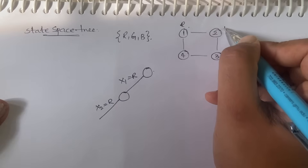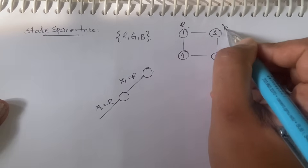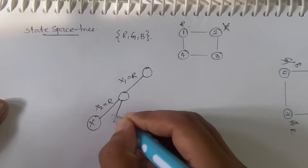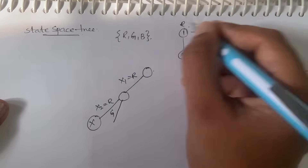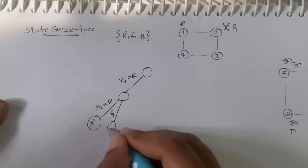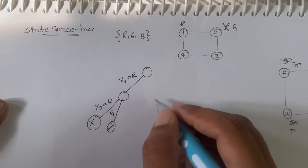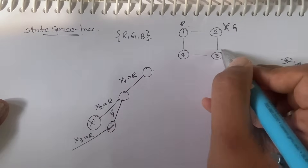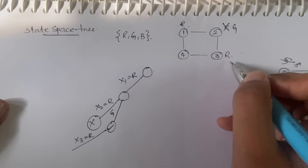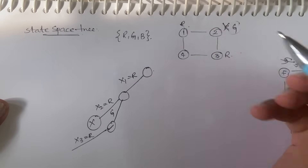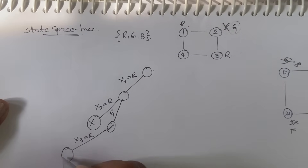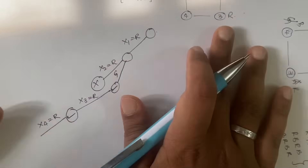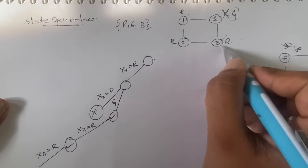If you give red to x2, they will have the same color, so you cannot — this becomes a dead-end node. Can you give green to x2? Yes, the adjacent colors are not the same, so x2 = green is accepted. Moving further, can you give red to x3? Yes, it is accepted because the adjacent color is green. So x3 = red is accepted. Now checking x4: can you give red to x4?